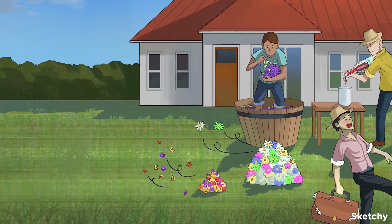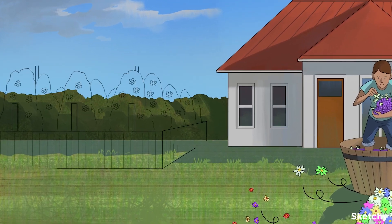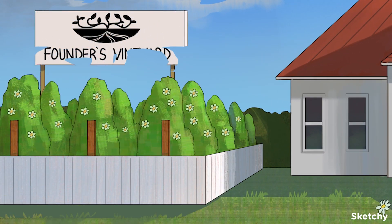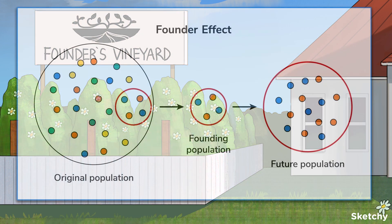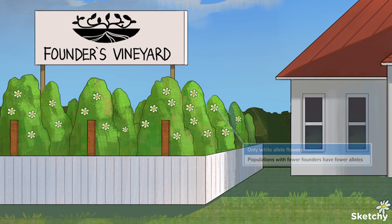Let's move on to Founder's Vineyard to see the Founder Effect in action. The folks at Founder's Vineyard started their very own winery with seeds stolen from Hardee's Winery. The Founder Effect occurs when a small number of migrants settle in a new area and start a population. Because the starting population consists of many fewer individuals than the population they came from, the new population typically has fewer alleles and will have lower genetic variation as it grows. You'll notice that at Founder's Vineyard, they're only growing one color of allele flower — since they started with just a few stolen seeds, they ended up with a pretty undiverse population.